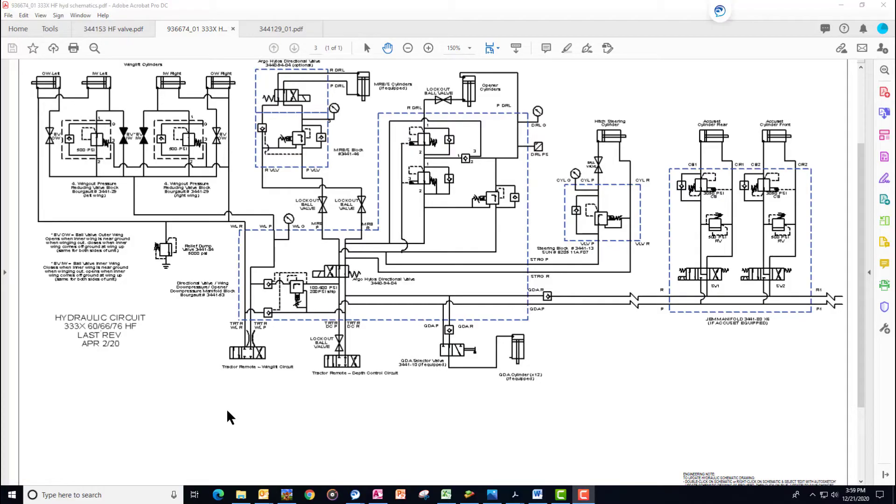Let's review what we've learned so far. We're going to look at the drawing for the 33-35, 33-30, the 60 and 66 and 76 foot high float drills. All of the 60, 66 and 76 foot drills, whether the high float or standard running gear, have the same wing lift sequencing system. The other sizes of drills are configured a little bit different, but let's focus in on a very common one.